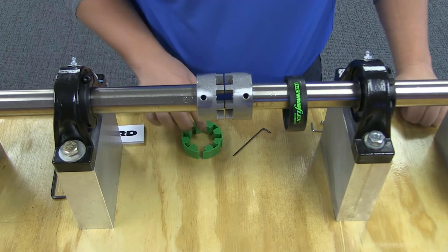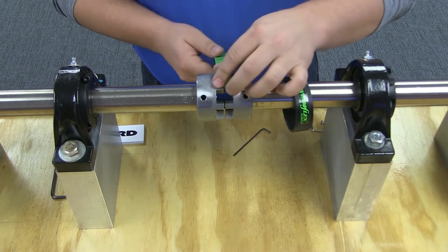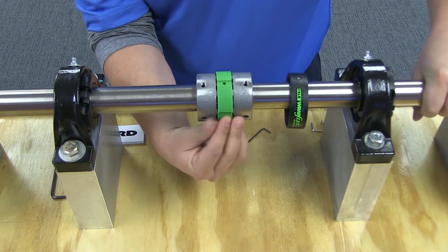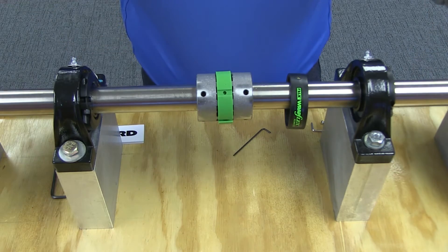To install the element, rotate one hub so that the teeth of both hubs are aligned axially. Spread apart the element so that it will fit over the hub teeth and wrap the element between the two hubs.